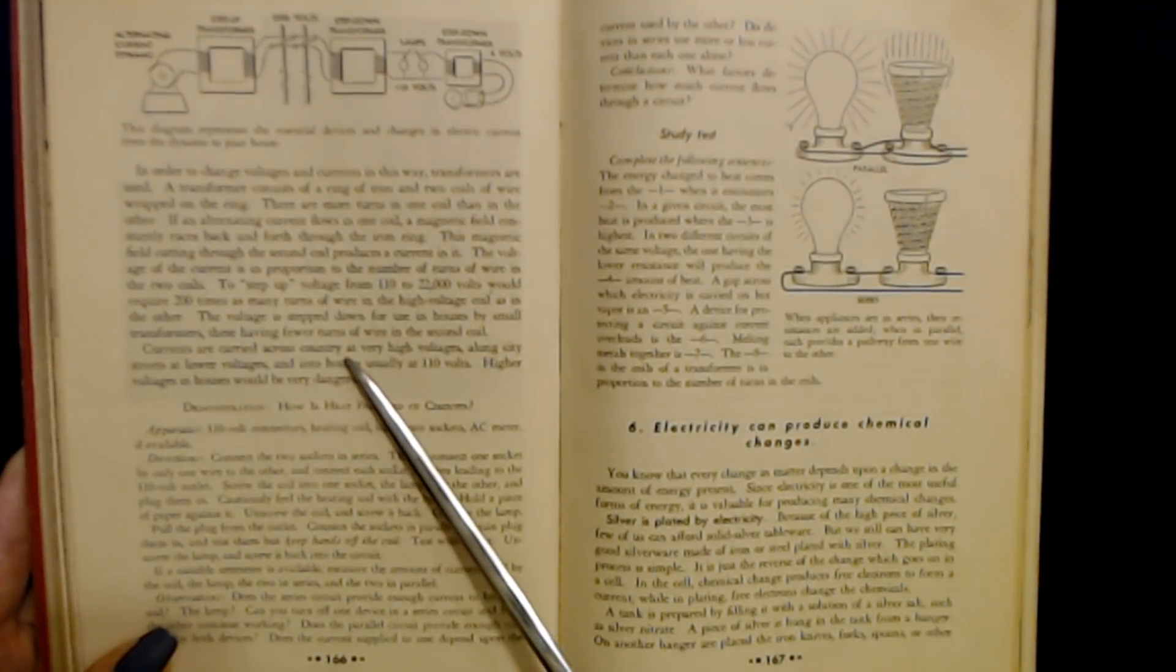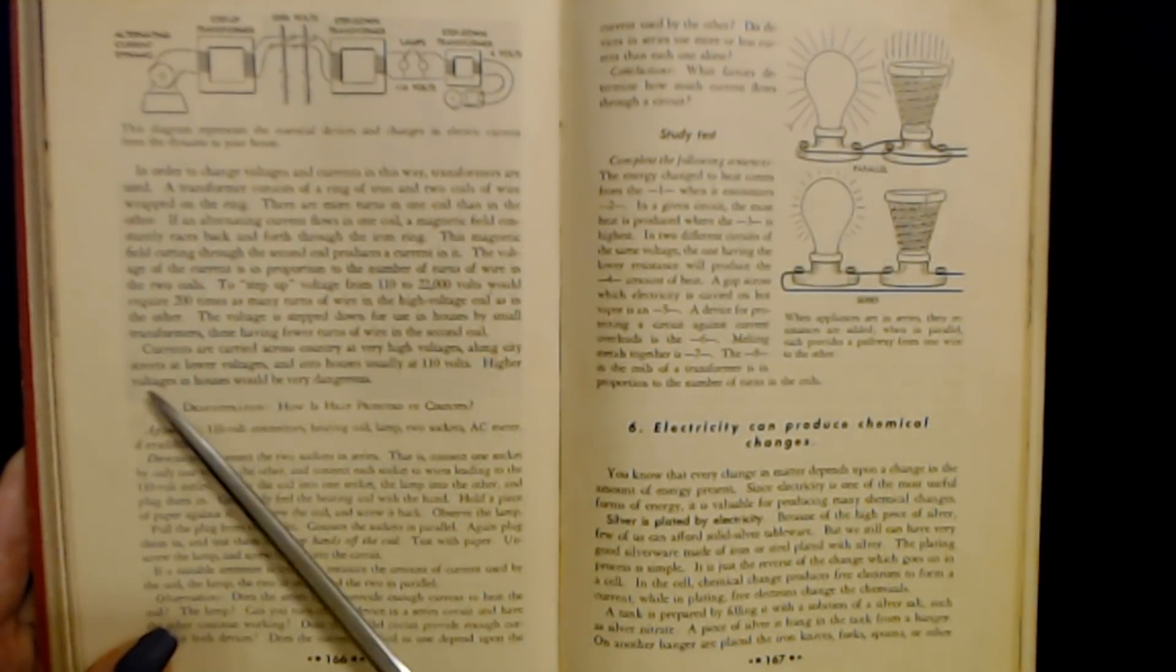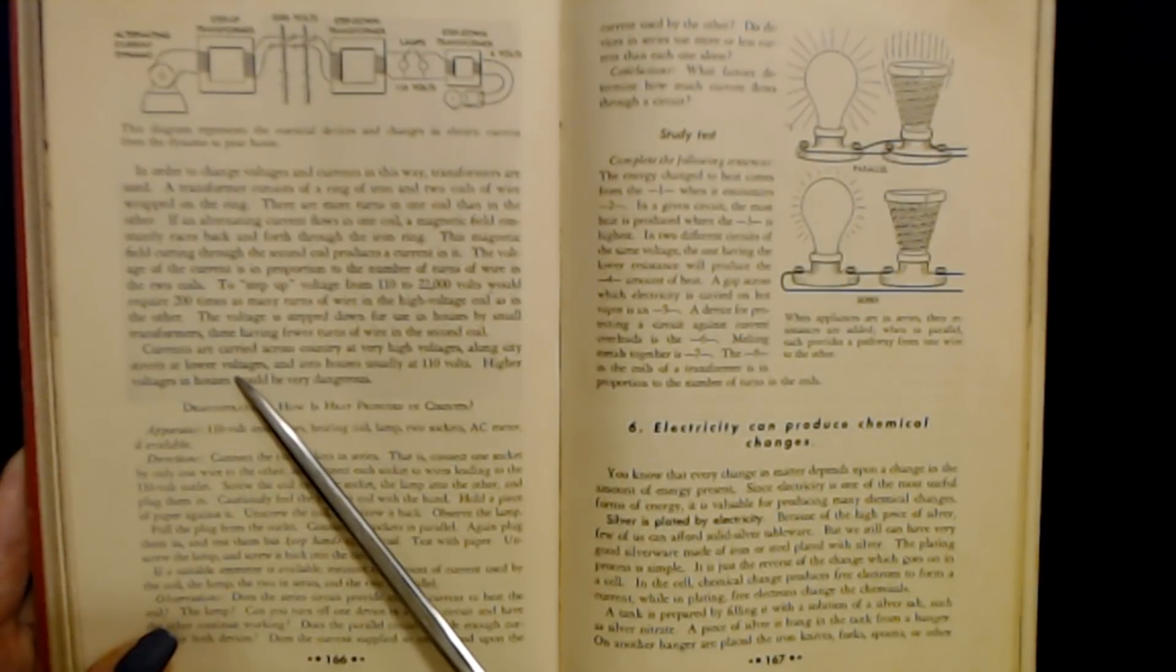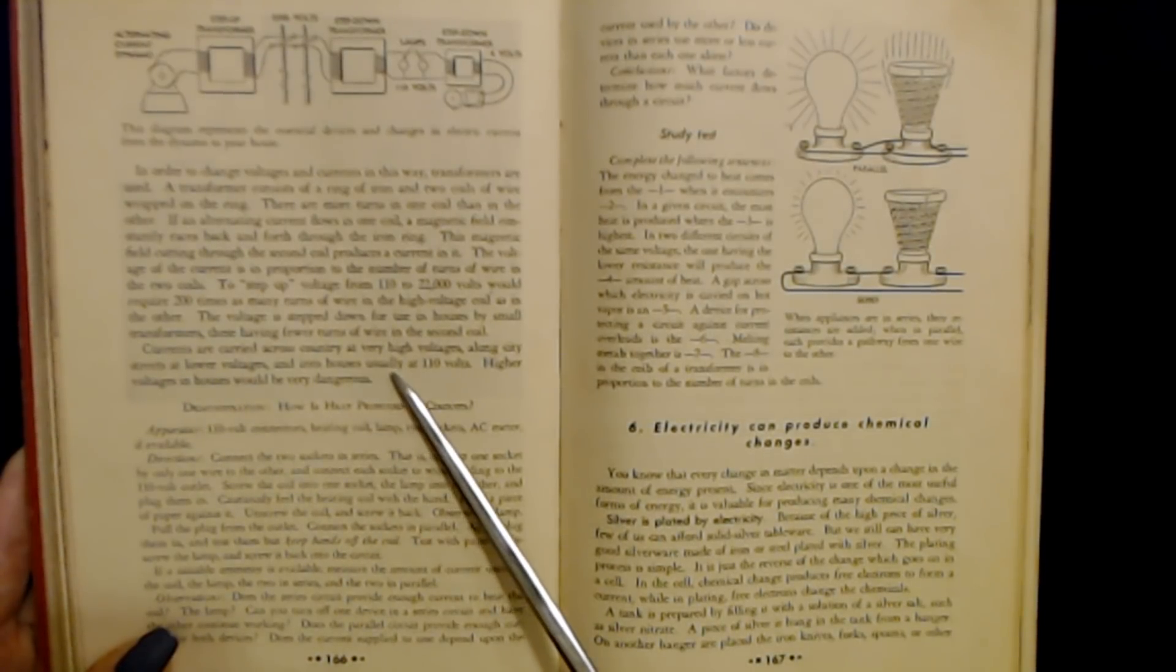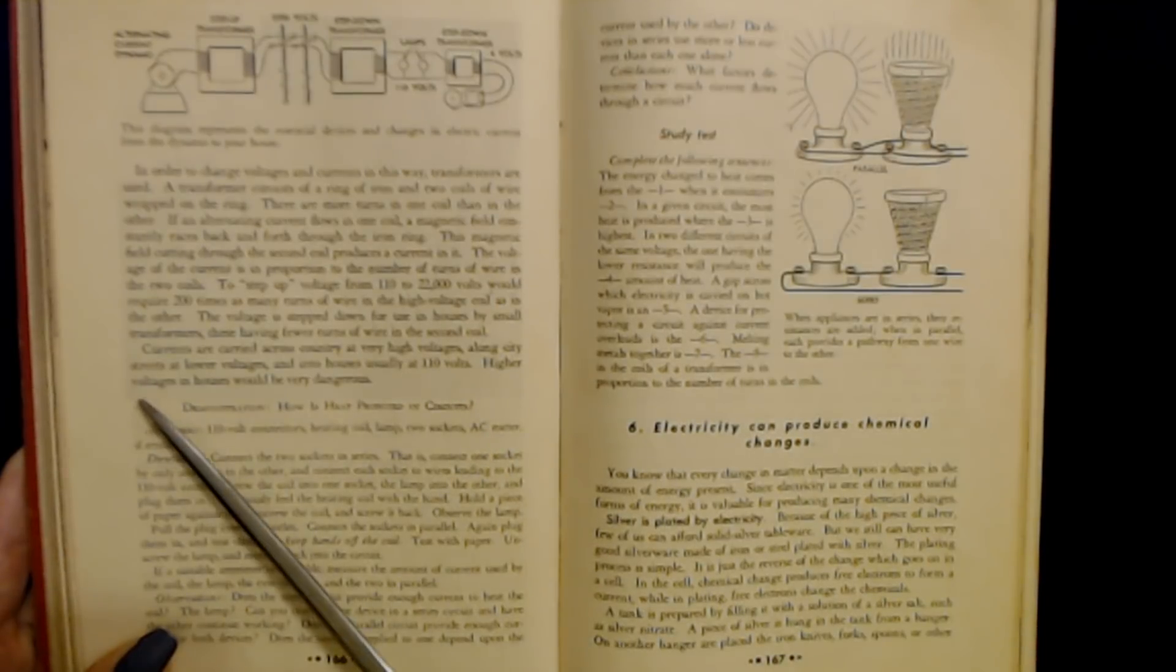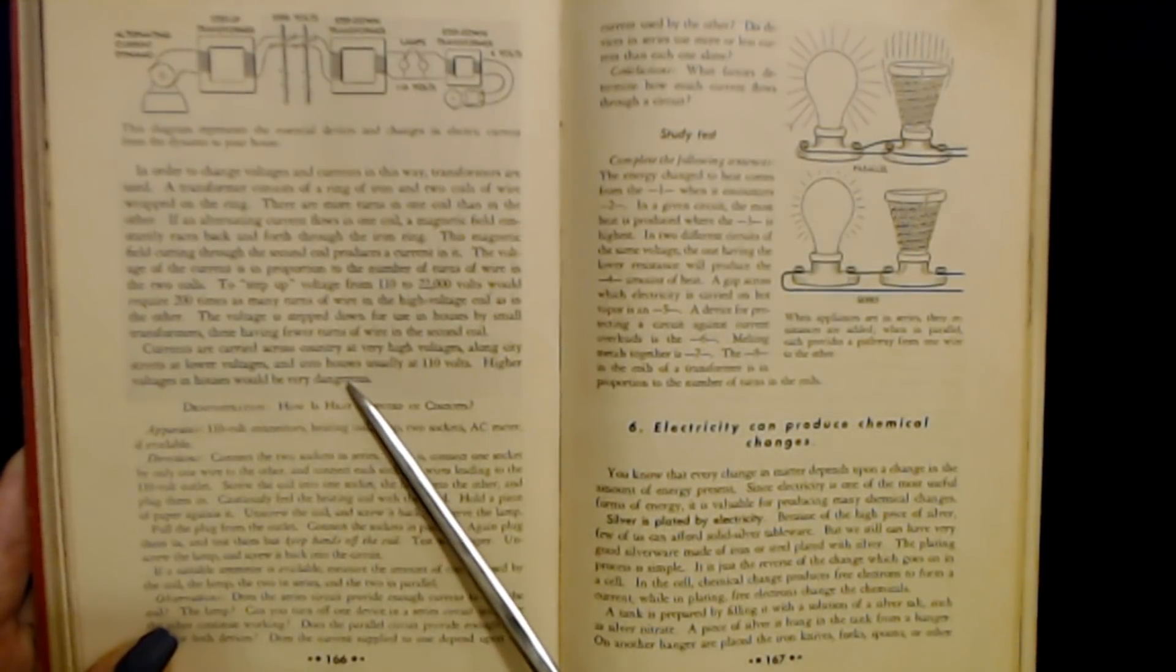Currents are carried across country at very high voltages, along city streets at lower voltages, and into houses usually at 110 volts. Higher voltages in houses would be very dangerous.